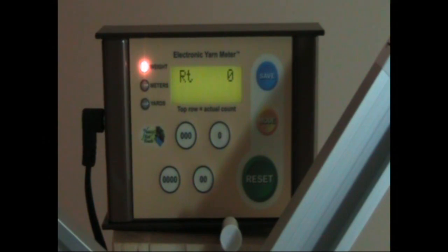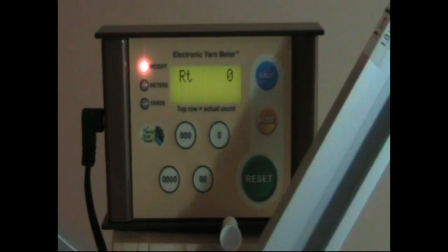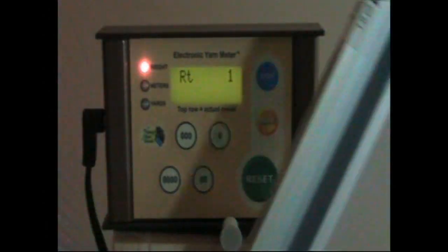Each time the swift arm that has the magnet passes by the receiving magnet on the unit, it will register a one in the count. We'll take it slow here so you can see it.